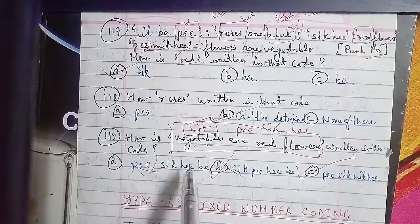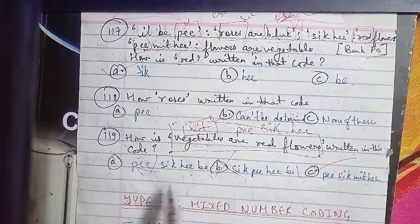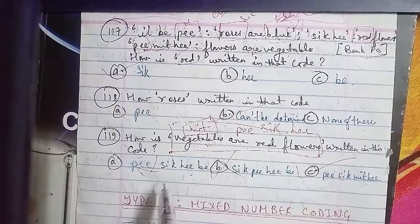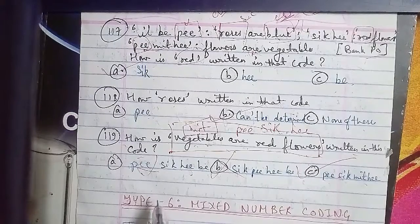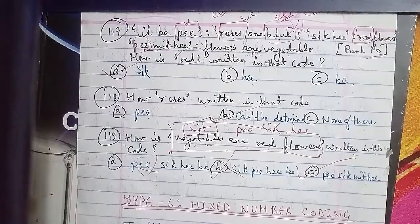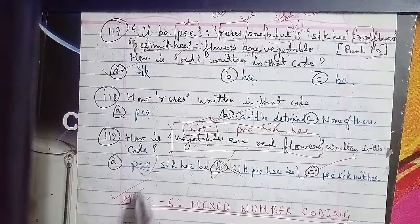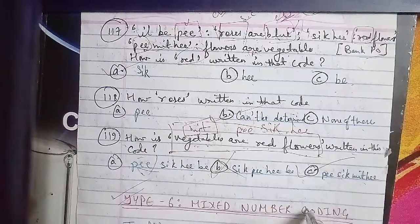Moving on to the next topic we have to discuss in today's class: Type 6, which is mixed number coding. Now we have alphabetic coding, and we are also finding number coding mixed together.